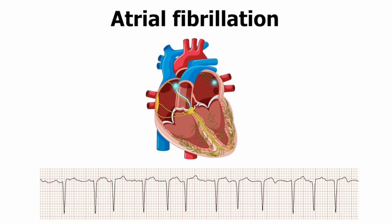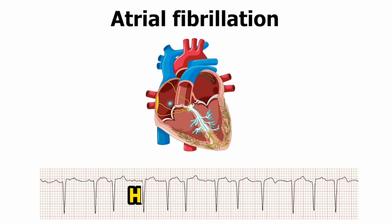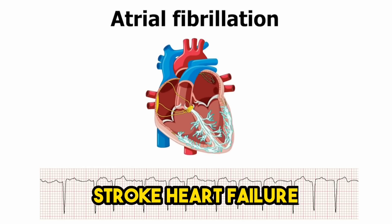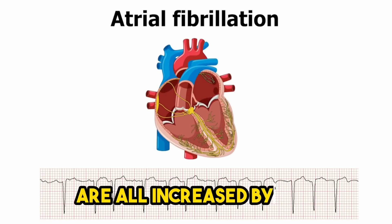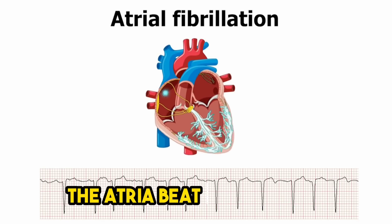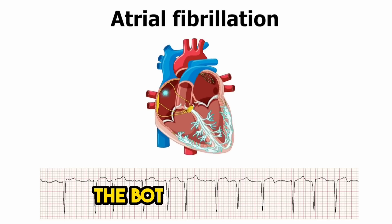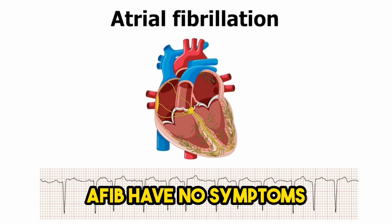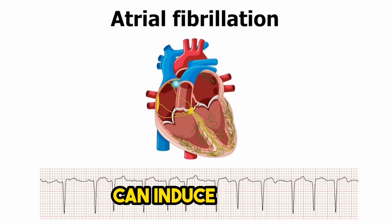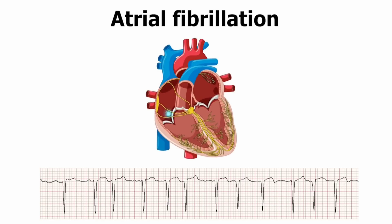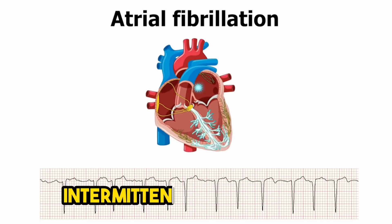Atrial fibrillation, or AFib, is an arrhythmia — an irregular and typically very rapid heart rhythm — that can result in blood clots in the heart. Stroke, heart failure, and other heart-related problems are all increased by AFib. During atrial fibrillation, the upper chambers of the heart, the atria, beat chaotically and irregularly, out of sync with the bottom chambers, the ventricles. Many patients with AFib have no symptoms. AFib can, on the other hand, induce a fast, hammering heartbeat, palpitations, shortness of breath, or weakness. Atrial fibrillation episodes can be intermittent or continuous.